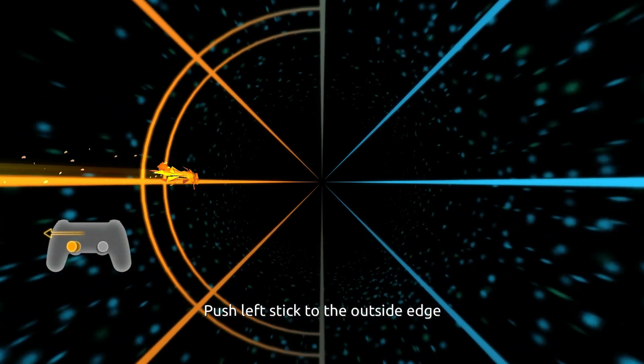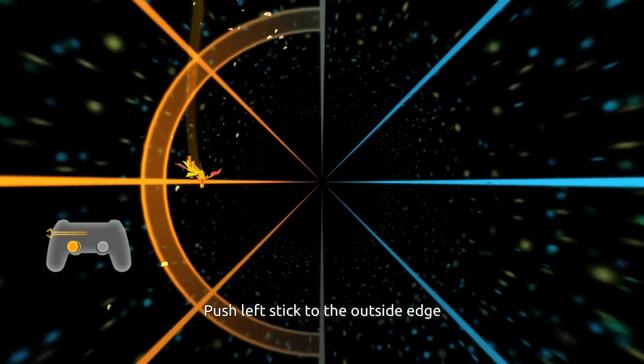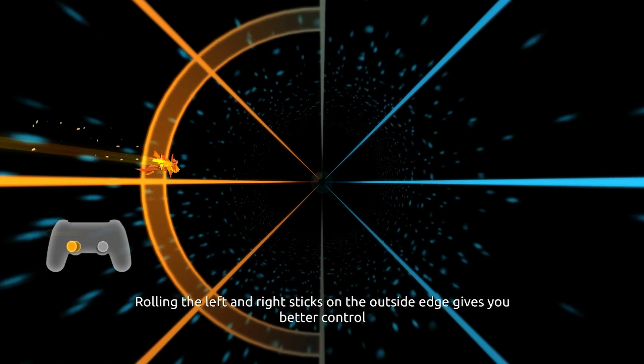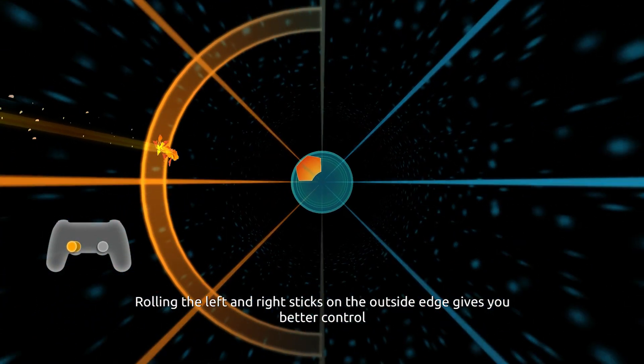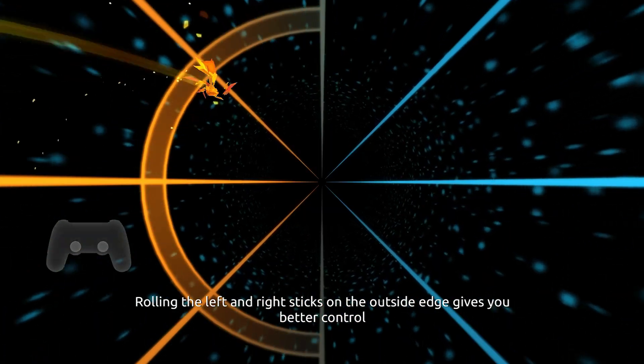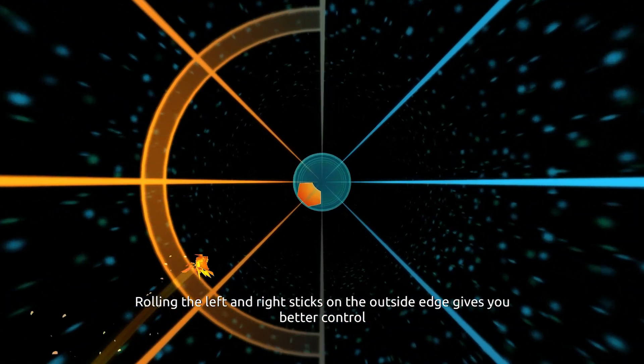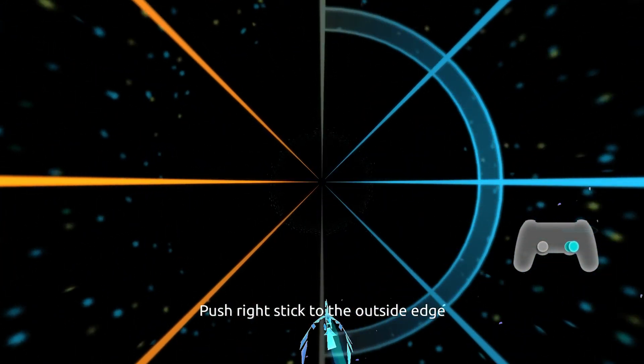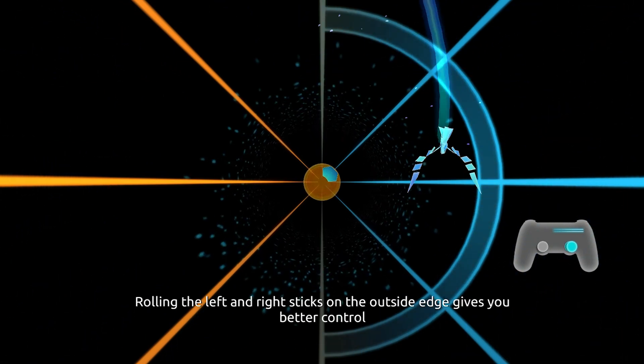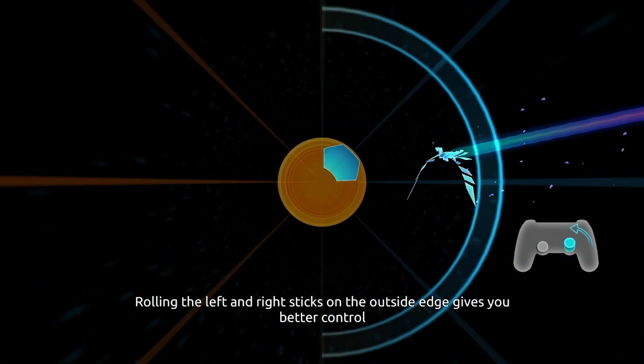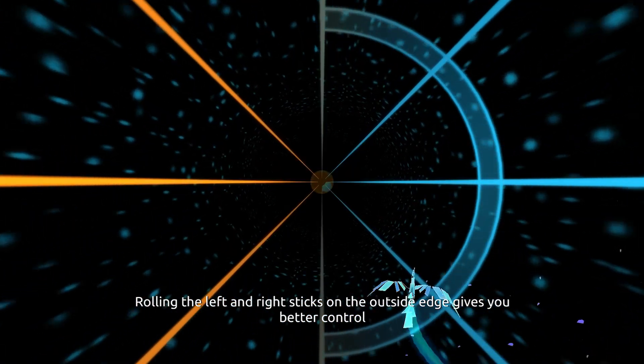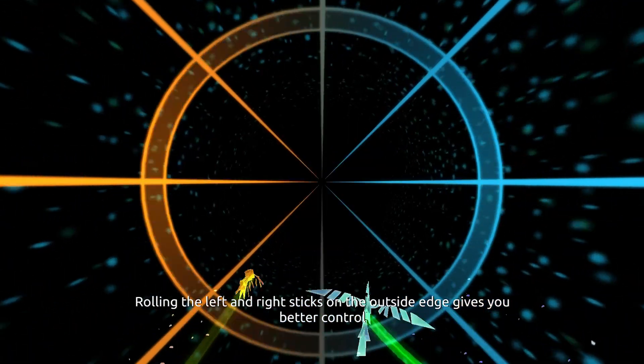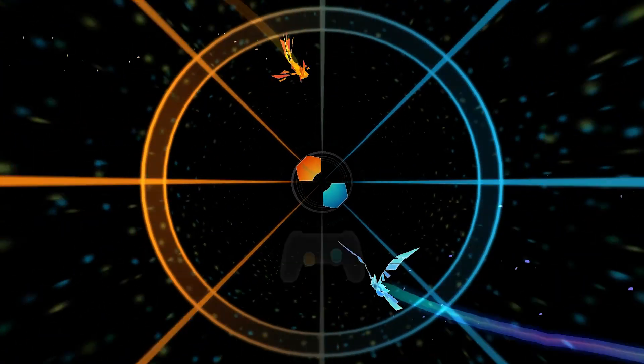We're gonna find out what it's all about. That controls the crazy fish. Rolling the left and right sticks gives you better control. So you can't go through the blue if you're the orange and vice versa. I quite like the art style. That's quite nice.